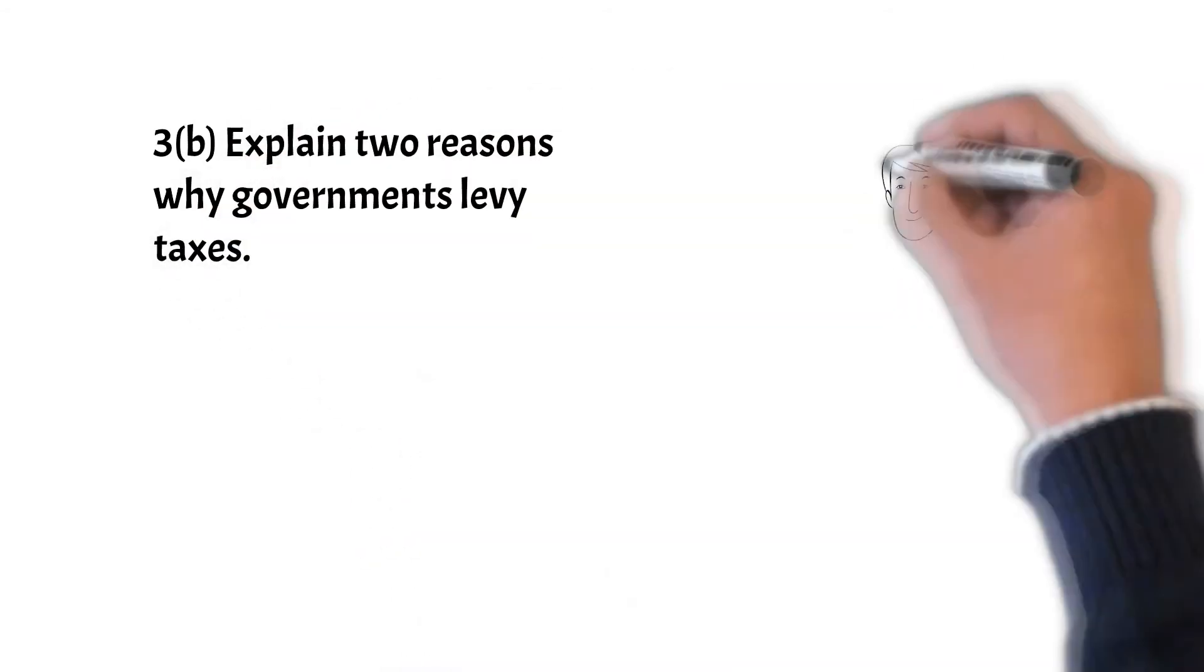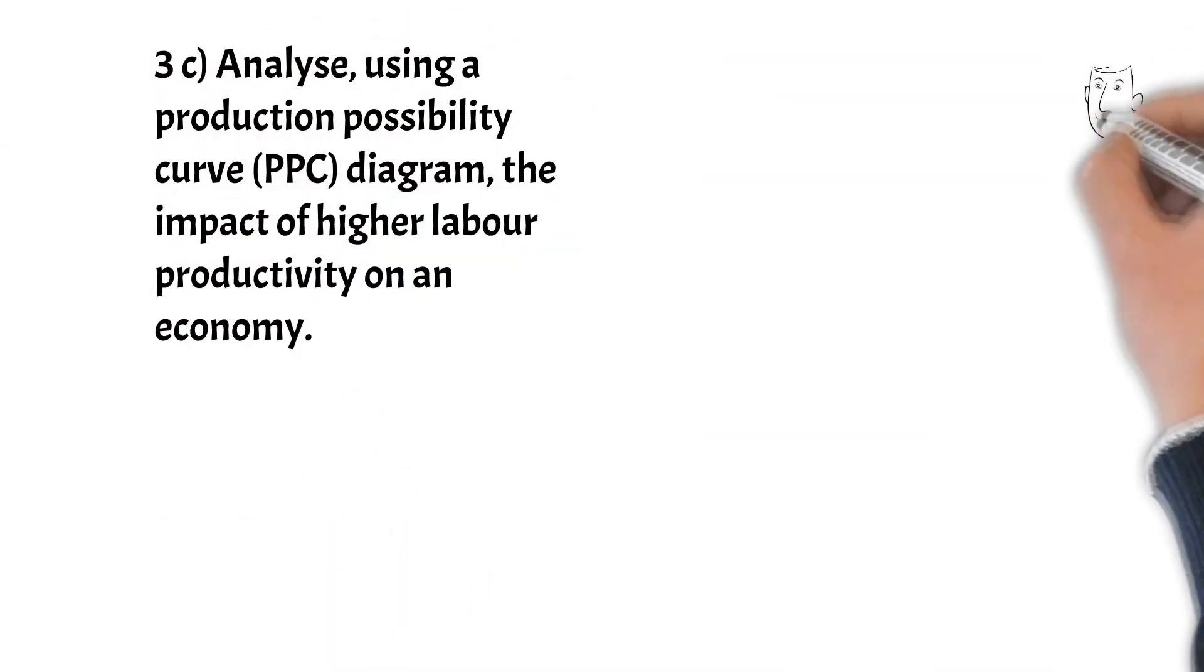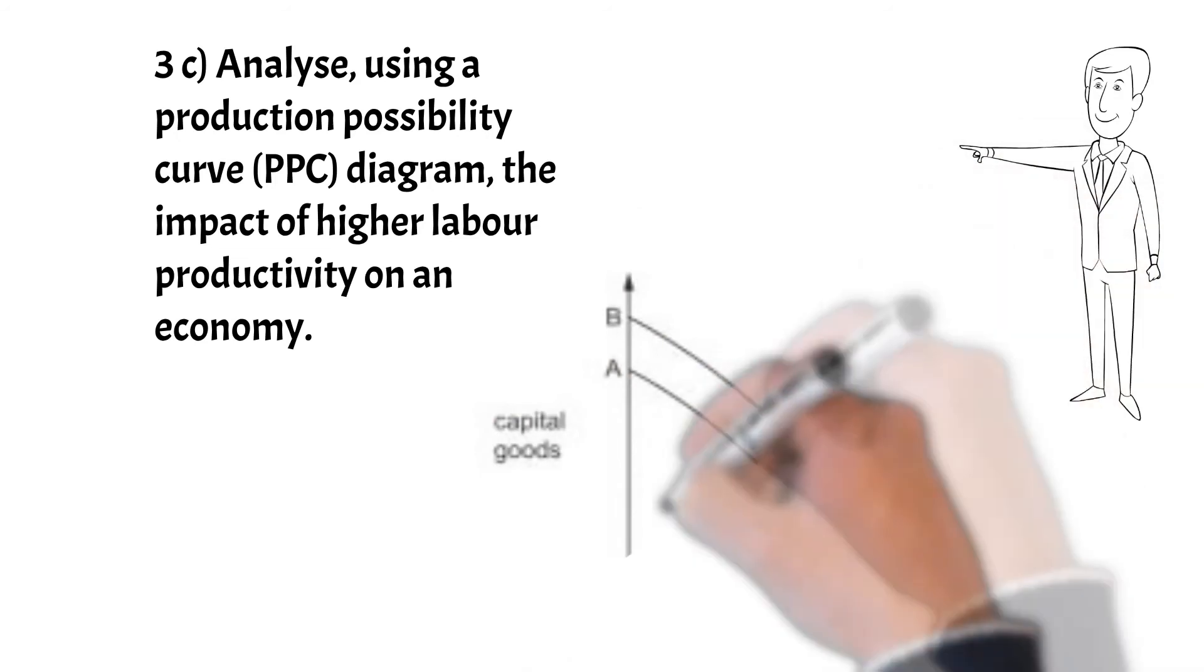Now 3b: explain two reasons why governments levy taxes. Now remember, explain means we have to explain why. Taxes are levied to be able to fund government spending and the types of government spending that might improve standards of living. Secondly, to be able to control inflation through fiscal policy and reducing total demand. Thirdly, to reduce inequality by taxing the rich and help the poor. Also, to discourage the consumption of demerit goods and improve the allocation of resources and reduce the external cost, to change external cost to private costs, for instance to reduce pollution. Finally, to reduce imports and to protect home producers.